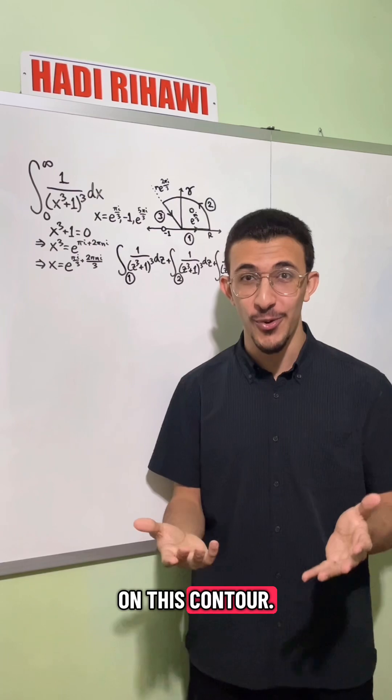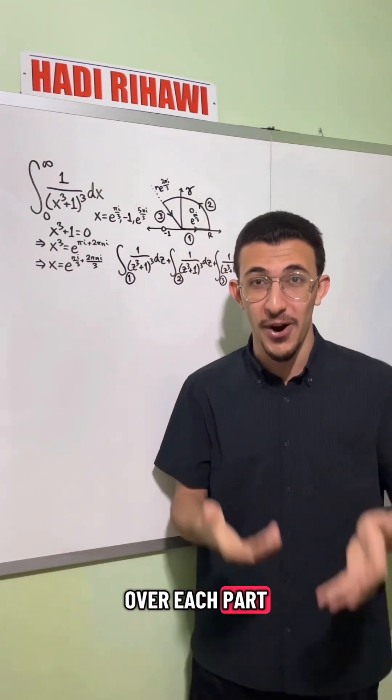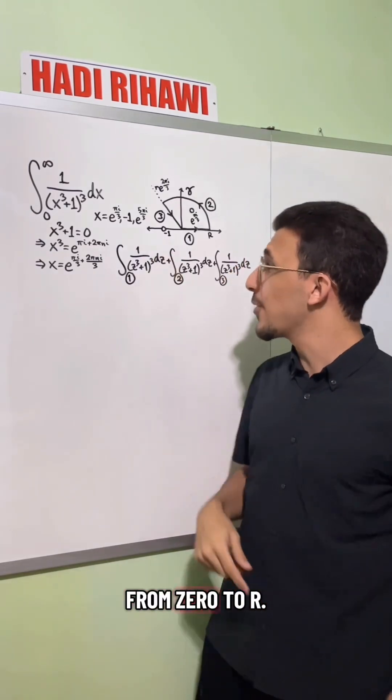And now we'll integrate our function on this contour. We see that integrating along the whole contour would be the same as integrating over each part. On the first part, it's very simple. We'll just go from zero to r.